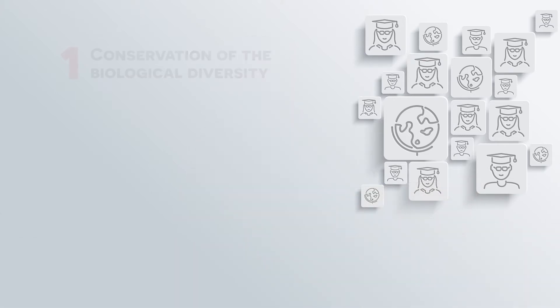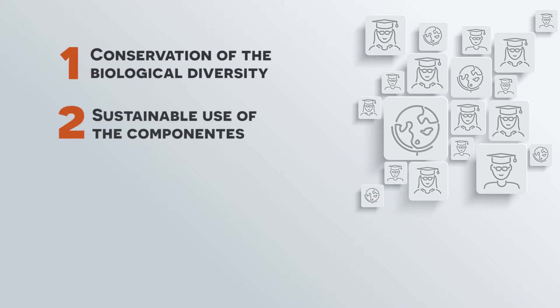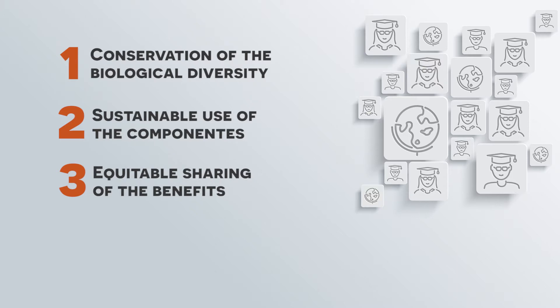This Convention on Biological Diversity came into force in 1993 and was the first global agreement on conservation and sustainable use of biodiversity and served as a blueprint for national actions. This Convention established three main goals: the conservation of biological diversity, the sustainable use of its components, and the fair and equitable sharing of the benefits from the use of genetic resources.